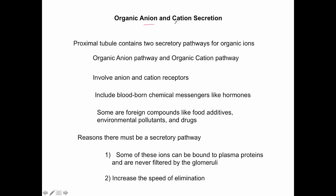Lastly, we have the secretion of organic anions and cations. An anion is a negatively charged ion; a cation is a positively charged ion. These are organic compounds that are either metabolites or foreign substances — typically drugs, food additives, or environmental chemicals. Some chemical messengers like hormones also fall into the category of organic anions and cations.